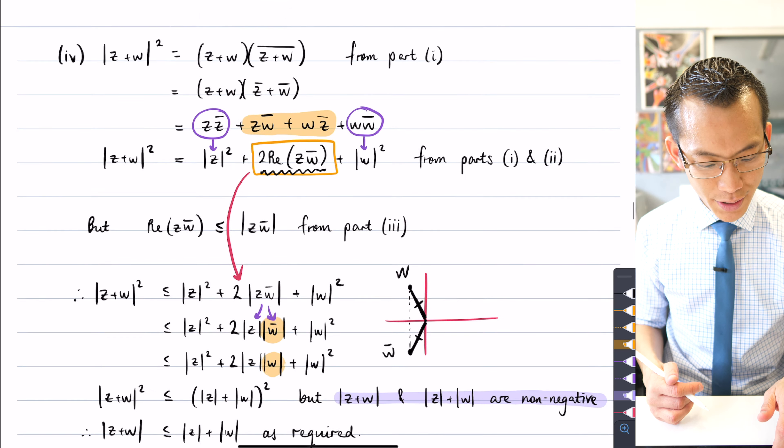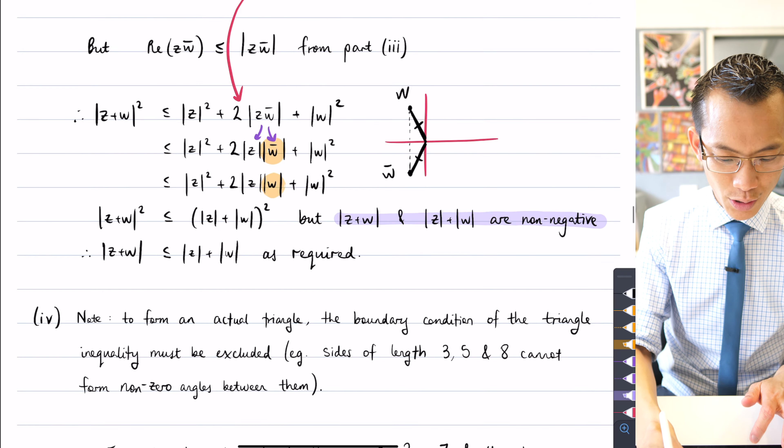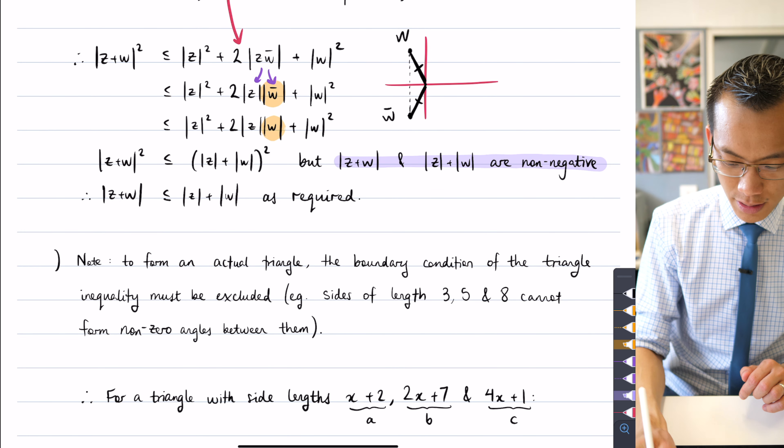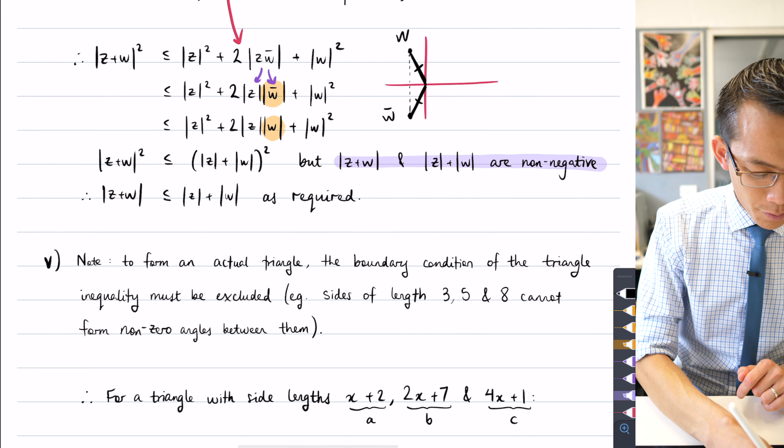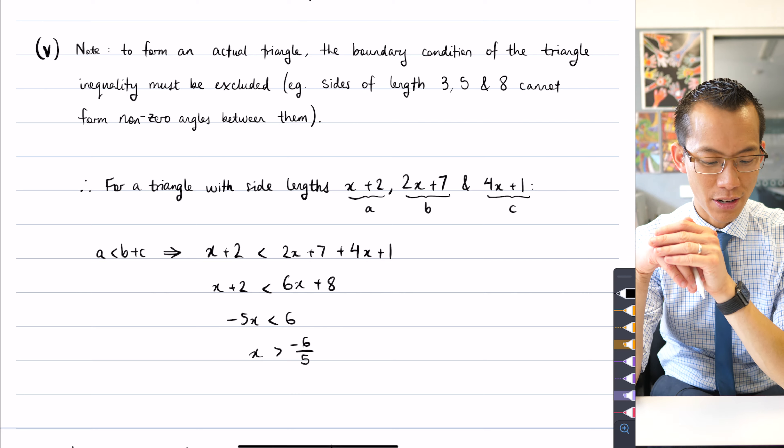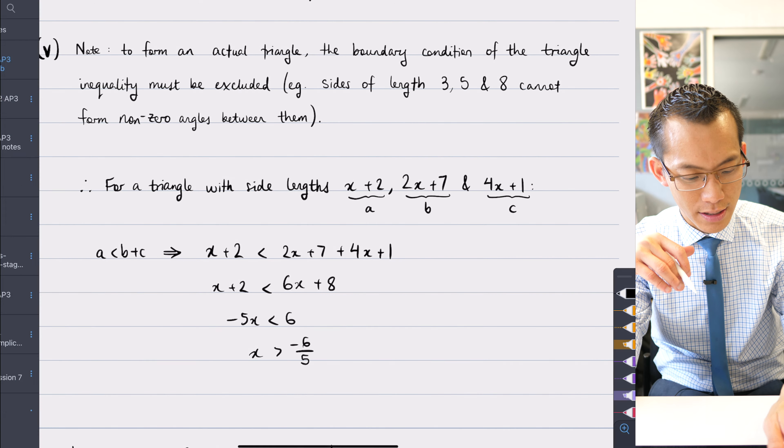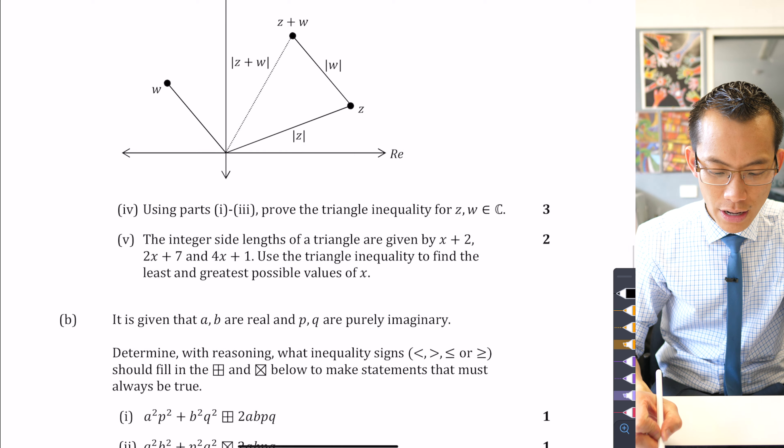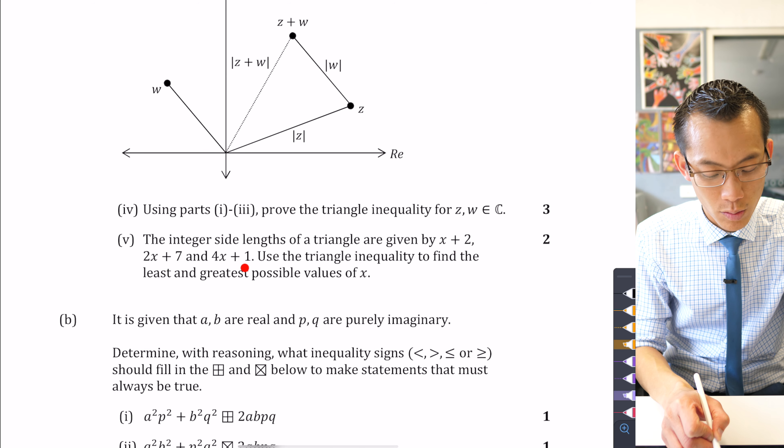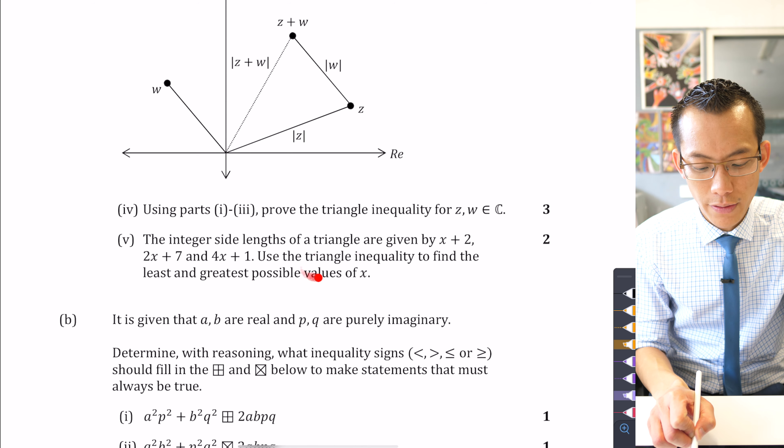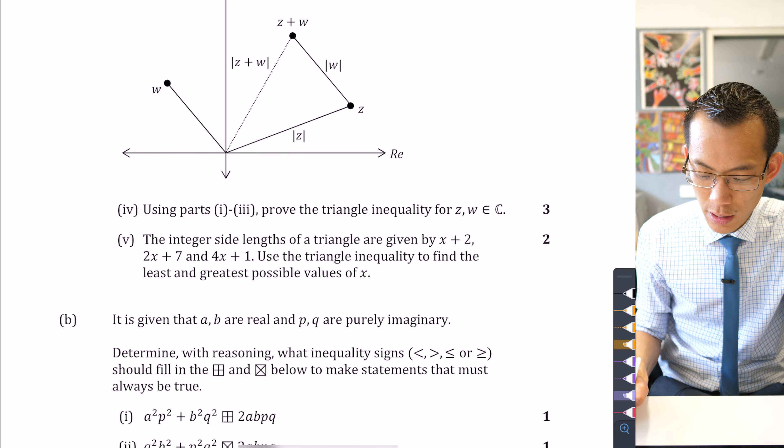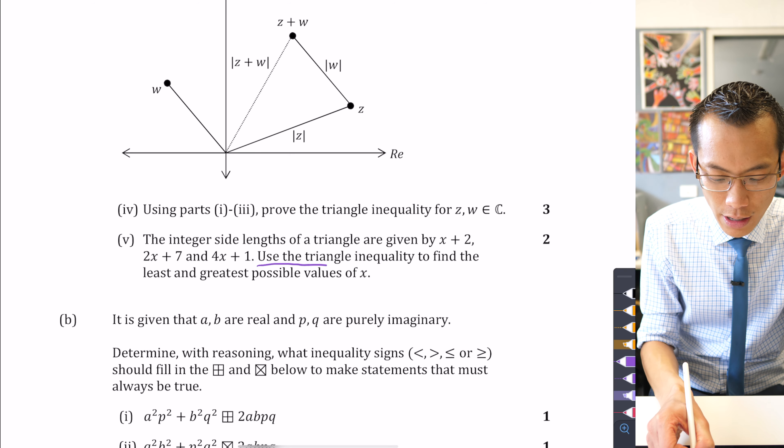So I'm so very close. I made a mistake calling that part four. It's actually part five. So let's fix that up. I've done part four. Now in part five, what I have to do is use the triangle inequality to actually find out. If I've got a triangle and I know its sides are these lengths, x plus 2, 2x plus 7, and 4x plus 1, what are the least and greatest possible values of x? Now we have to do better than just to sub in values. The question itself specifies use the triangle inequality.